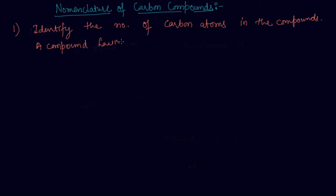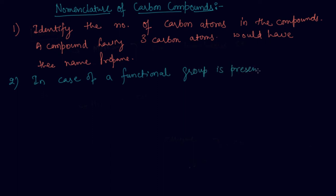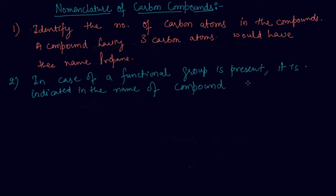A compound having three carbon atoms would have the name propane. The second step is: in case a functional group is present, it is indicated in the name of the compound with either a prefix or a suffix.